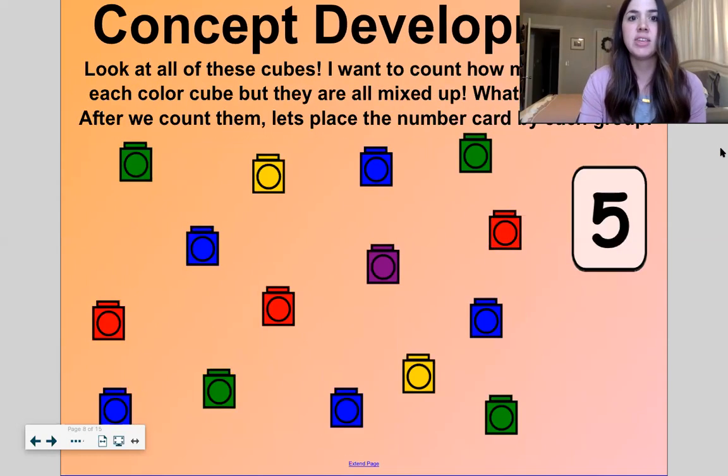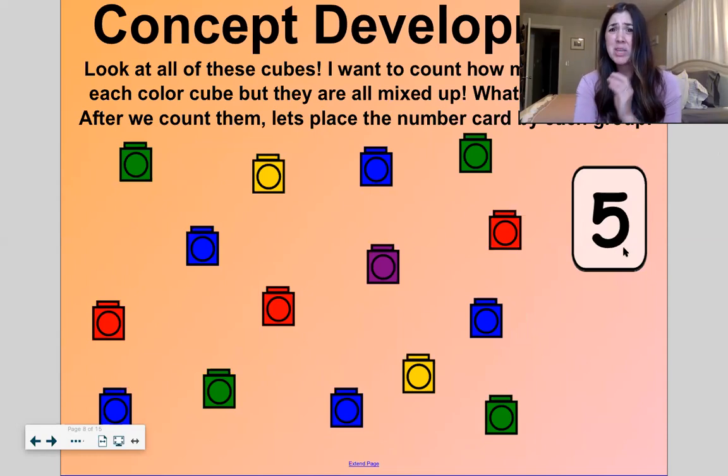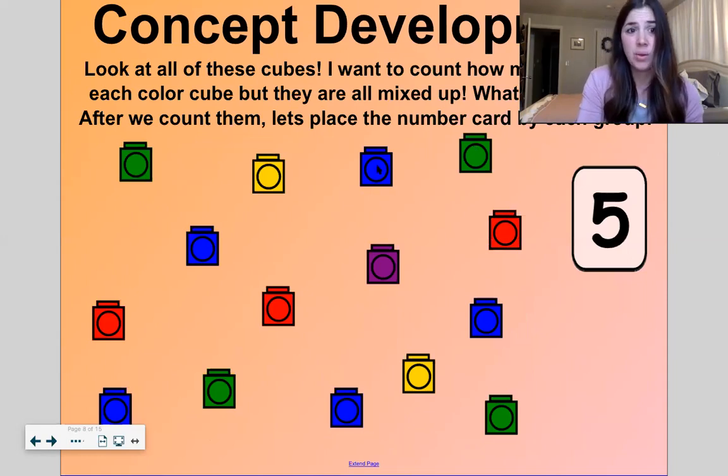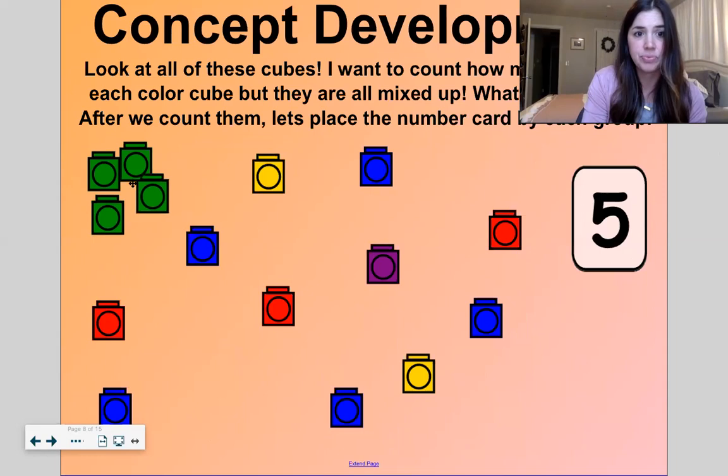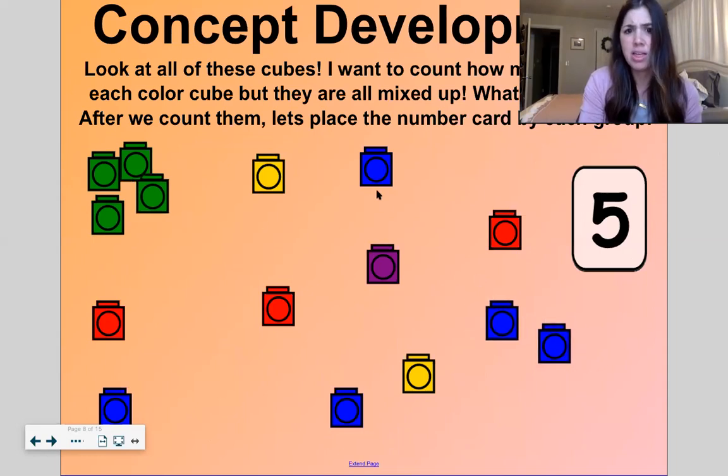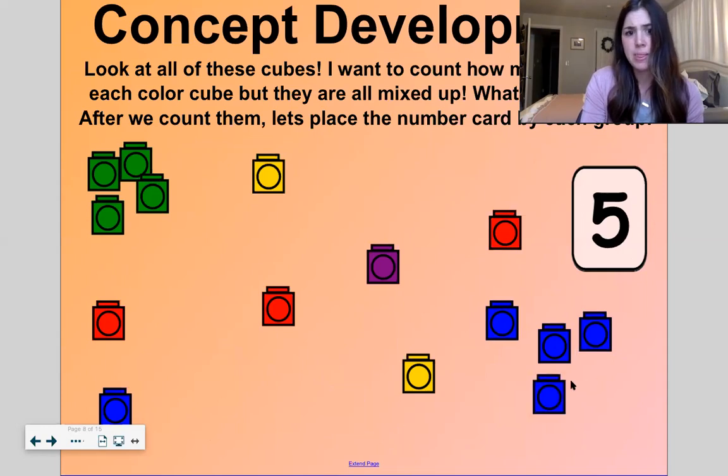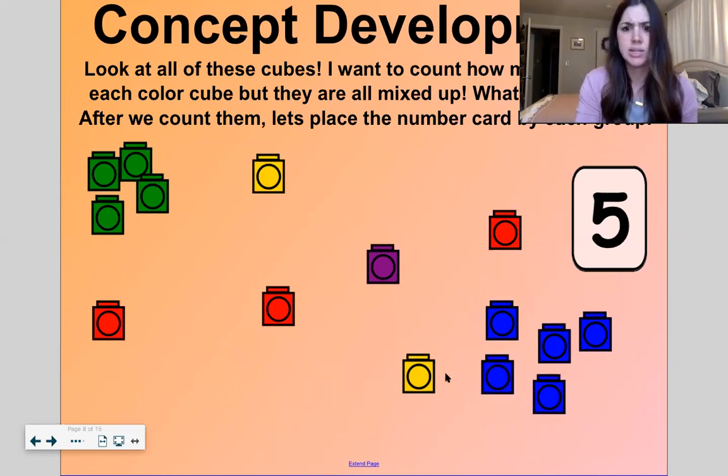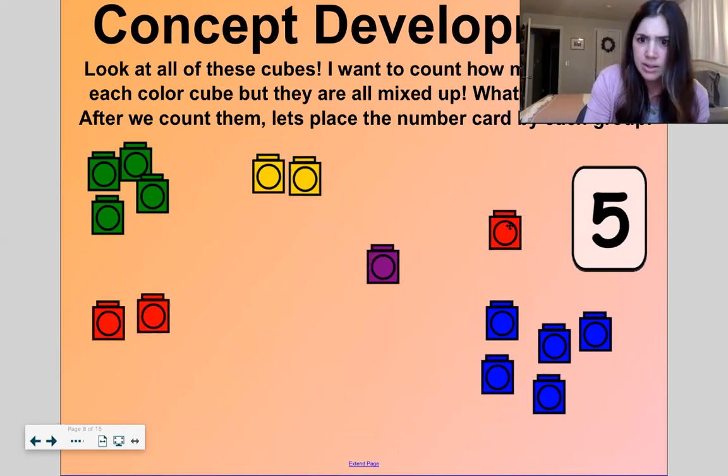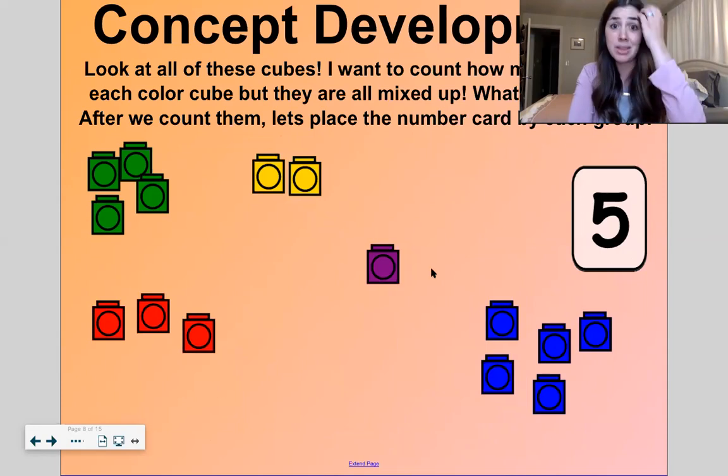Let's look at all of these cubes. And can you help me sort them by color? Let's do the green ones first. We'll put all the green ones together. And then let's put all the blue ones together. And let's do yellow next. And let's do red. And we can leave purple right there. So now that we've sorted them by color, what should we do? You see these number cards right here? Let's take these number cards and put them by the group of objects that have that many in them.